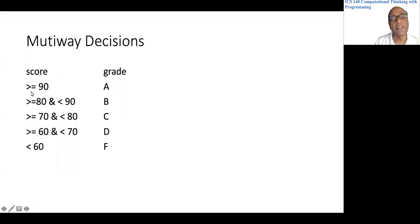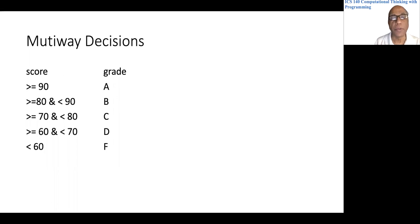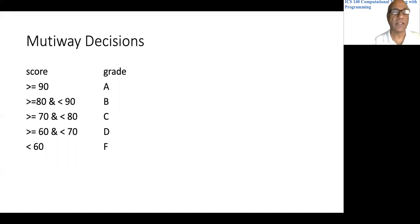It would go like this: if the score is greater than or equal to 90, print 'your grade is A.' Then check if the score is greater than or equal to 80 and less than 90, print B, and so on. But that would be rather tedious.